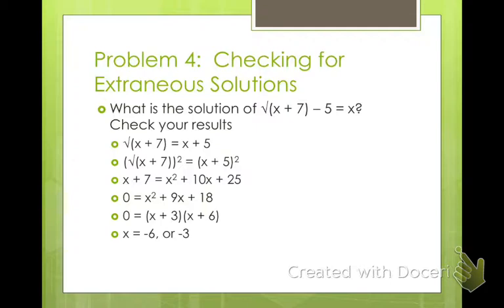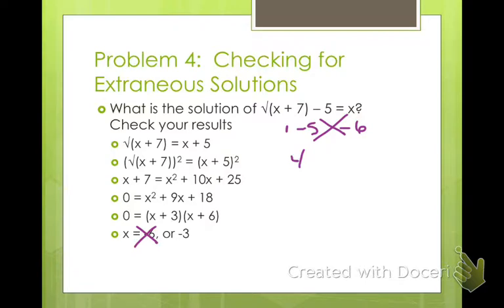We have to check these. If you plug in negative 6: negative 6 plus 7 is 1; square root of 1 is 1; and 1 minus 5 does not equal negative 6, so negative 6 is not a solution. Let's try negative 3: negative 3 plus 7 is 4; square root of 4 is 2; and 2 minus 5 equals negative 3 — yes it does. So negative 3 is our only solution.